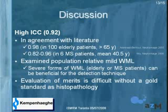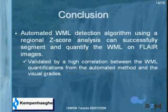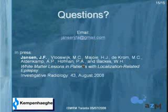To conclude, our automated white matter lesion detection algorithm using regional Z-score analysis was able to successfully segment and quantify white matter lesions on FLAIR images, validated by high correlations with visual rating. The paper is now in press in Investigative Radiology and will come out in August. Thank you for your attention.